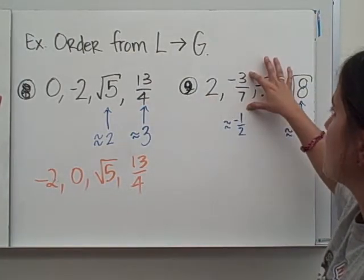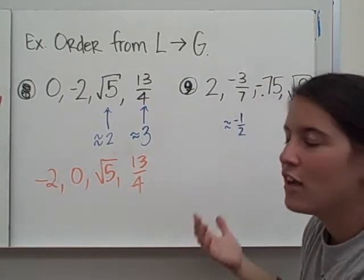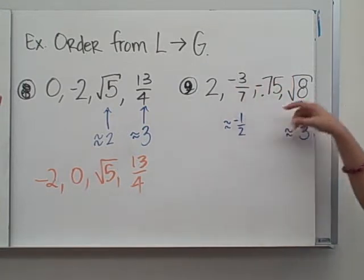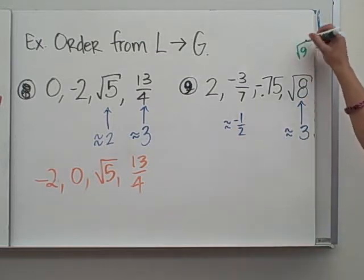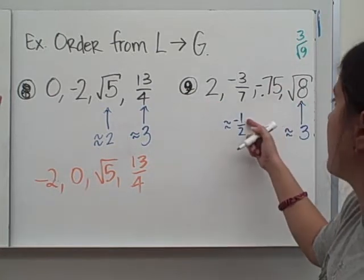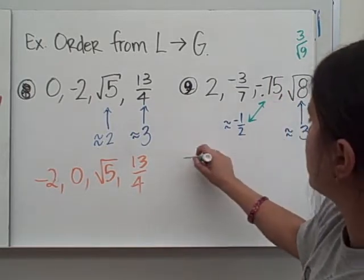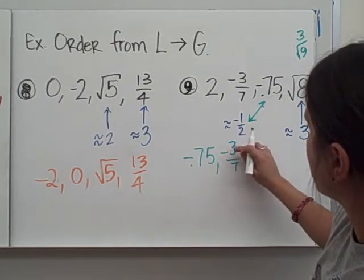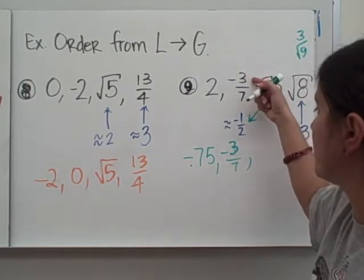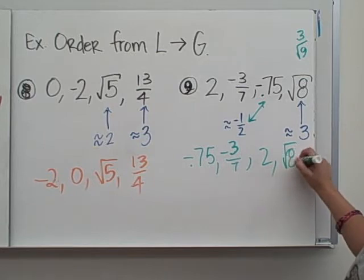Another example: order 2, negative three-sevenths, negative 0.75, and square root of 8. Negative three-sevenths is about negative one-half because 3 is half of 6, so it's close to negative one-half. Square root of 8 is about 3 because 8 is close to 9 and the square root of 9 is 3. Ordering least to greatest: negative 0.75 is smallest, then negative three-sevenths, then 2, then square root of 8.